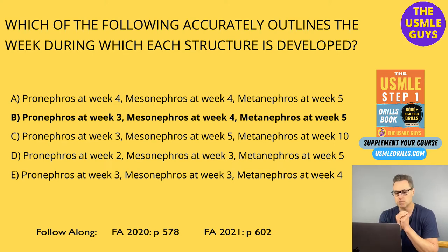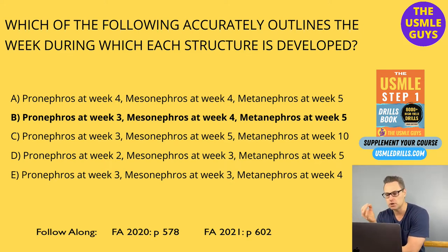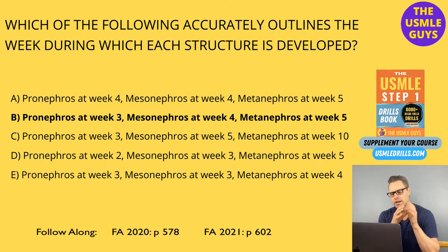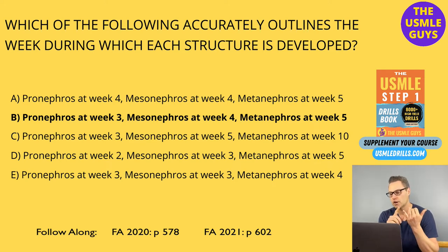The metanephros will be seen in the fifth week of gestation, and it remains as the permanent adult kidney. This develops from the ureteric bud, which is an outgrowth of the mesonephric duct and the metanephric mesoderm, derived from the caudal part of the nephrogenic ridge. The embryonic ureteric bud is responsible for the ureter, the renal pelvis, the collecting ducts, as well as the major and minor calyces. The metanephric mesoderm, on the other hand, is responsible for the formation of the structures of the glomerulus all the way through to the DCT.